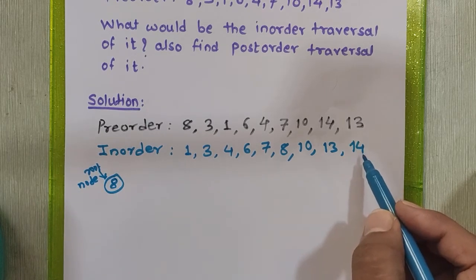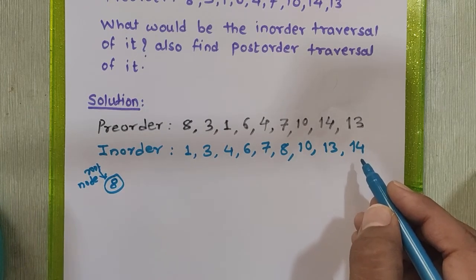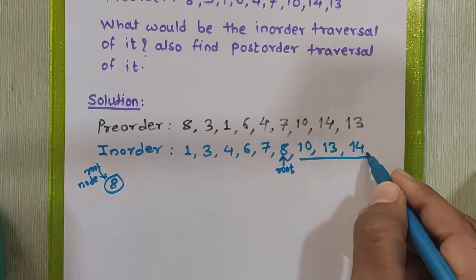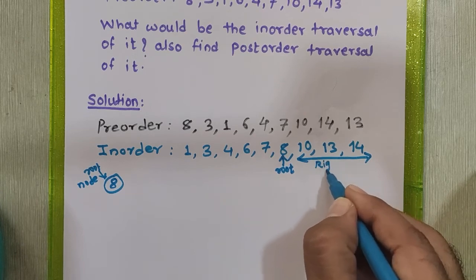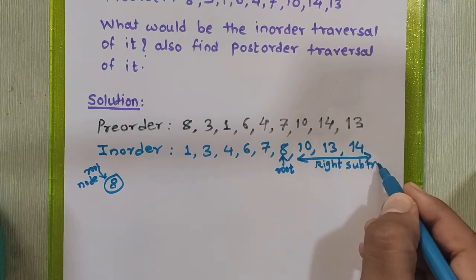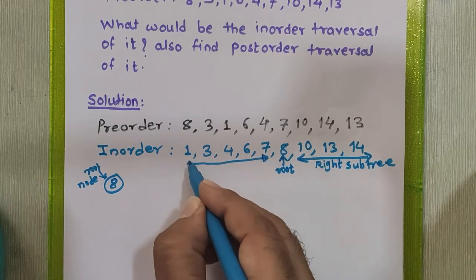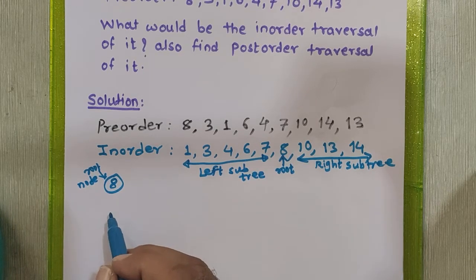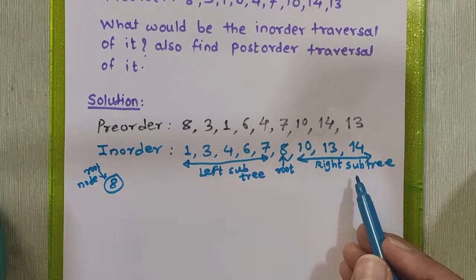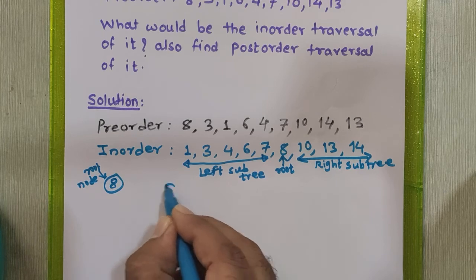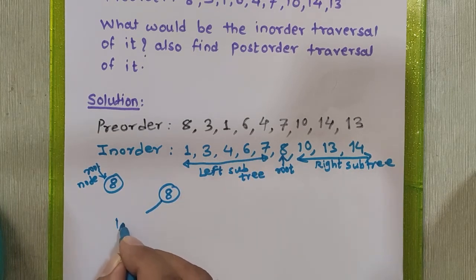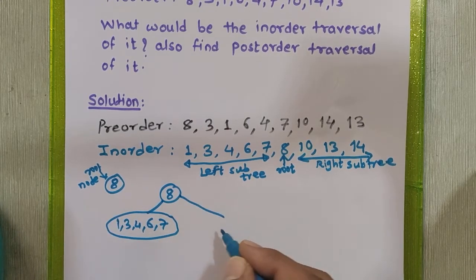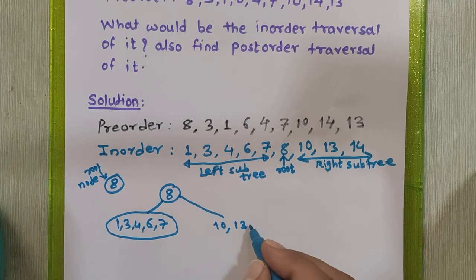To find the left and right children of the root node we refer to the in-order traversal sequence. We check where the root node 8 appears in the in-order sequence. The part appearing on the right-hand side of 8 is the right subtree, and the part on the left-hand side is the left subtree. So 1, 3, 4, 6, 7 go to the left subtree and 10, 13, 14 go to the right subtree.